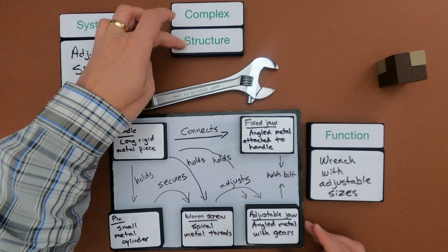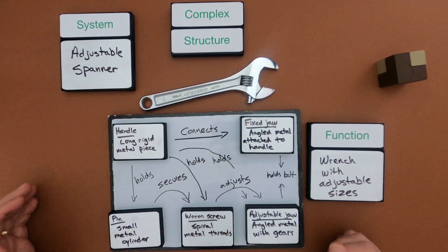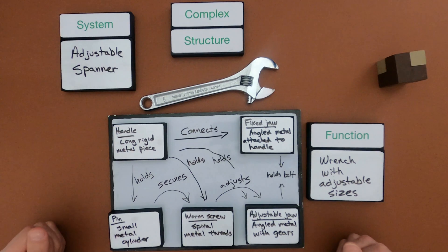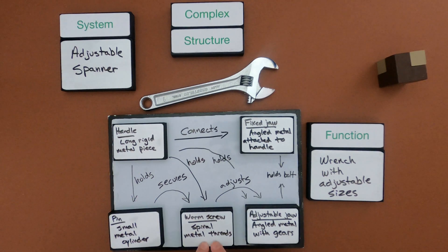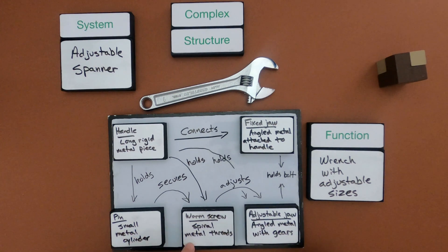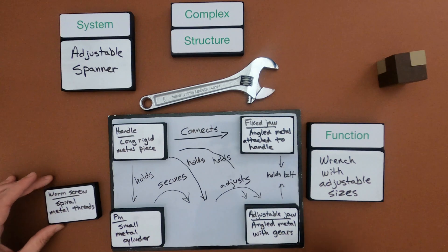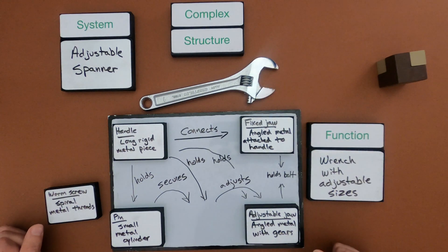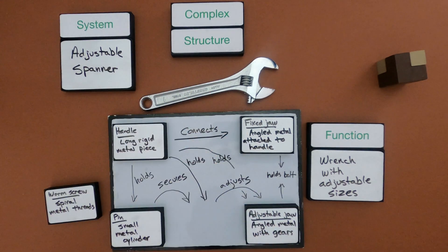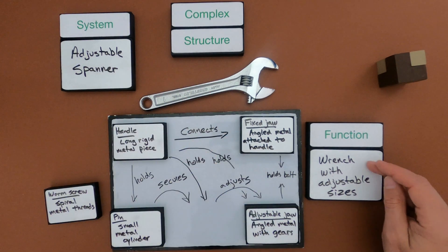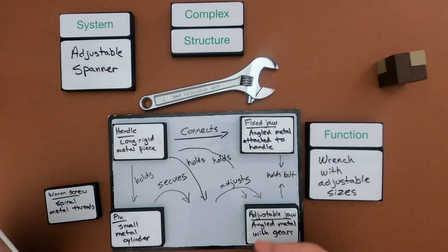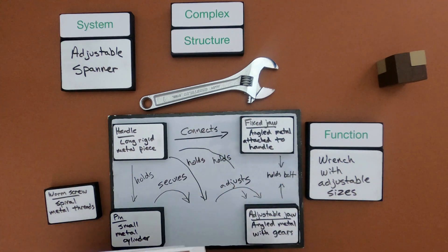This is a complex structure with all these individual structures and I can read it almost like a sentence. The handle holds the worm screw, which is used to adjust the adjustable jaw. The pin secures the worm screw. As I'm doing this I can start thinking about what happens if I pull one of these out — so if I pull out the worm screw, how would that affect the overall system?